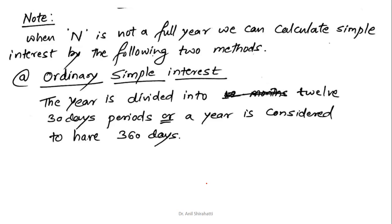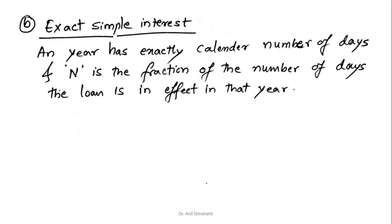Now, where N in the last equation is not a full year, we can calculate simple interest by following two methods. One is ordinary simple interest, where the year is divided into 12 thirty-day periods, or a year is considered to have 360 days. The other is exact simple interest, where the year has the exact calendar number of days — that is 365 — and N is the fraction of number of days the loan is taken.